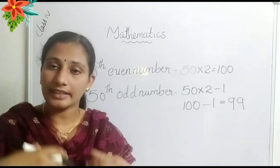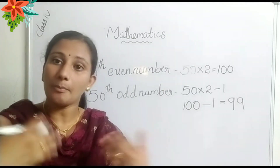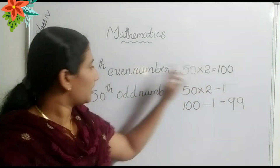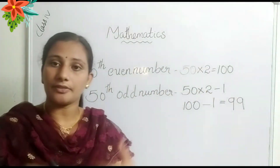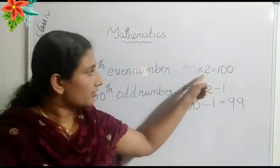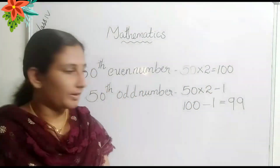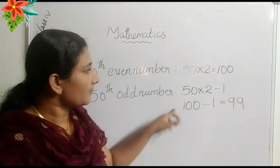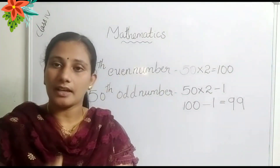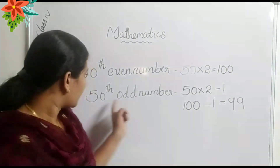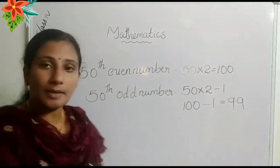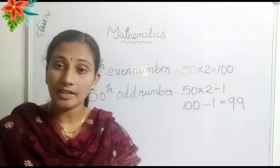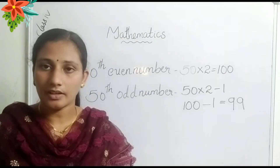If you want to find the even number, that is the double of that number. So the fifteenth even number is the double of fifteen, which is thirty. The fifteenth odd number means the double minus one. So fifteenth double is thirty, and thirty minus one is twenty-nine. Twenty-nine is the fifteenth odd number.